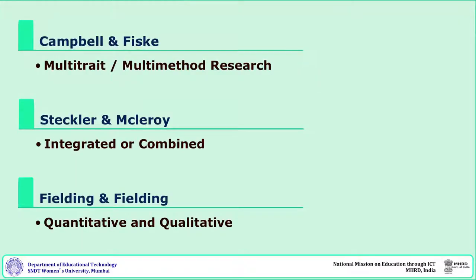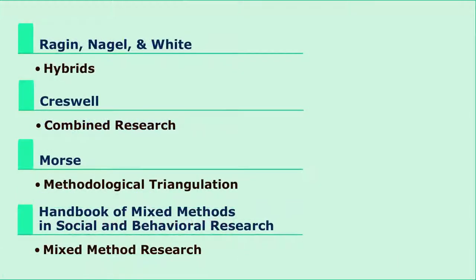Campbell and Fiske used the term 'multi-trait or multi-method research' because more than one method was used. Steckler and McElroy used 'integrated or combined research.' Fielding and Fielding used 'quantitative and qualitative methods,' but it was too long. Nagel and White used the term 'hybrid.' Creswell used 'combined research' and Morse used 'methodological triangulation.' But in the Handbook of Mixed Methods in Social and Behavioral Research, the term 'mixed method research' was finalized.